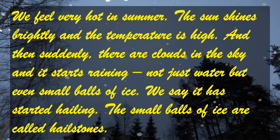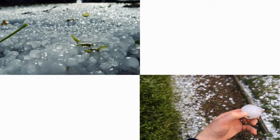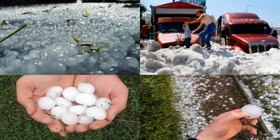We feel very hot in summer. The sun shines brightly and the temperature is high. And then suddenly there are clouds in the sky and it starts raining — not just water, but even small balls of ice. We say it has started hailing. The small balls of ice are called hailstones. Hailstones are formed when raindrops are carried upward by thunderstorm updrafts into extremely cold areas of the atmosphere and freeze. The hail falls when the thunderstorm updrafts can no longer support the weight of the hailstone, which can occur if the stone becomes large enough or the updraft weakens.